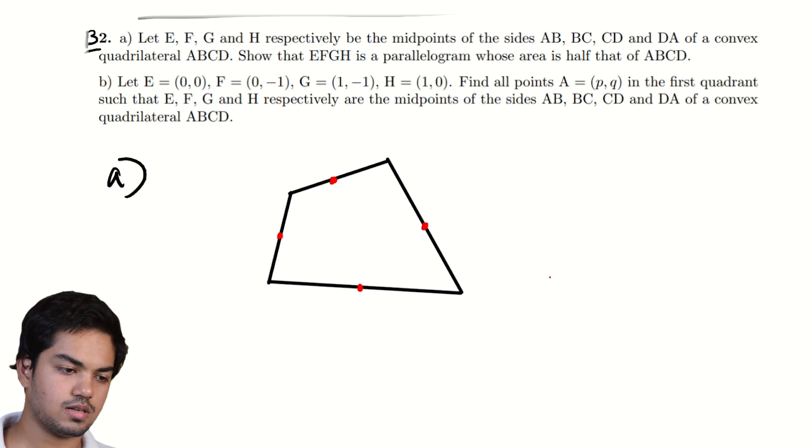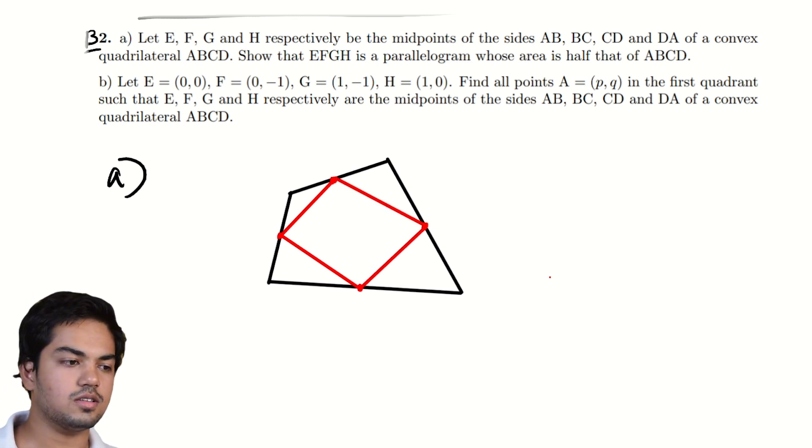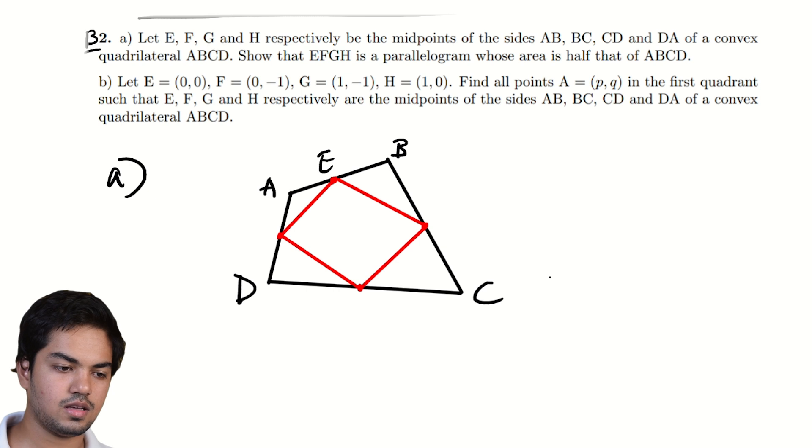So what is the midpoint quadrilateral? It's this one. And already we can start to see that this does look like a parallelogram. So if this is ABCD then we have E, F, G, H. How do we prove something like this?